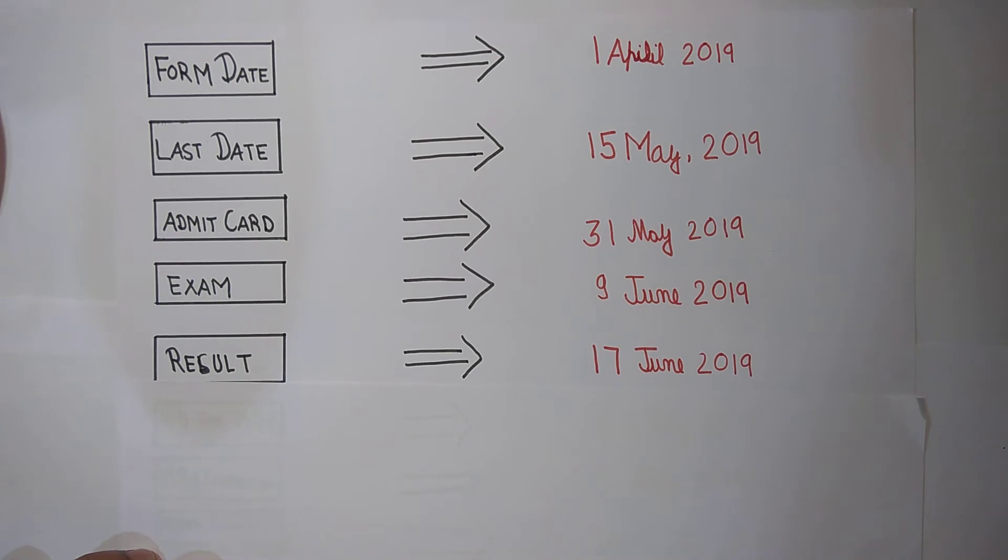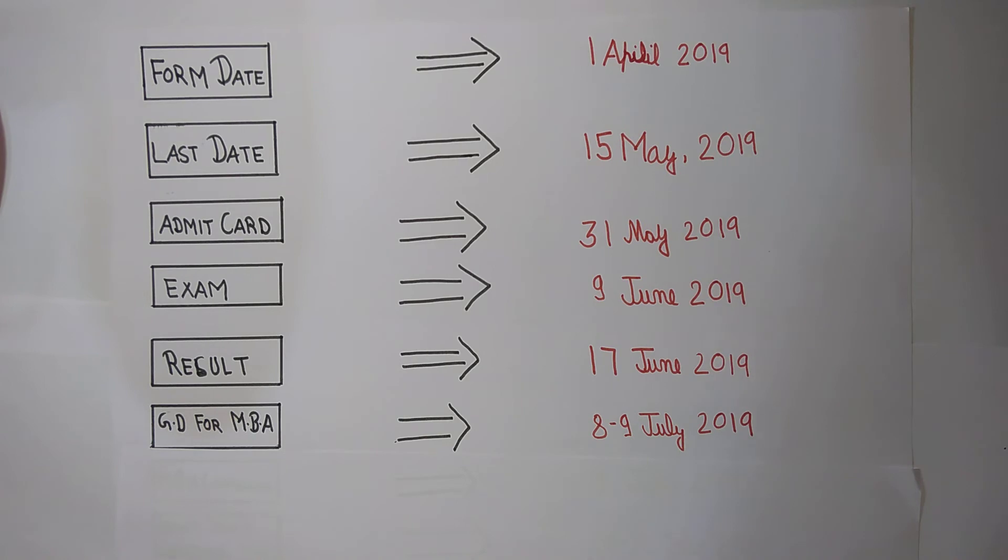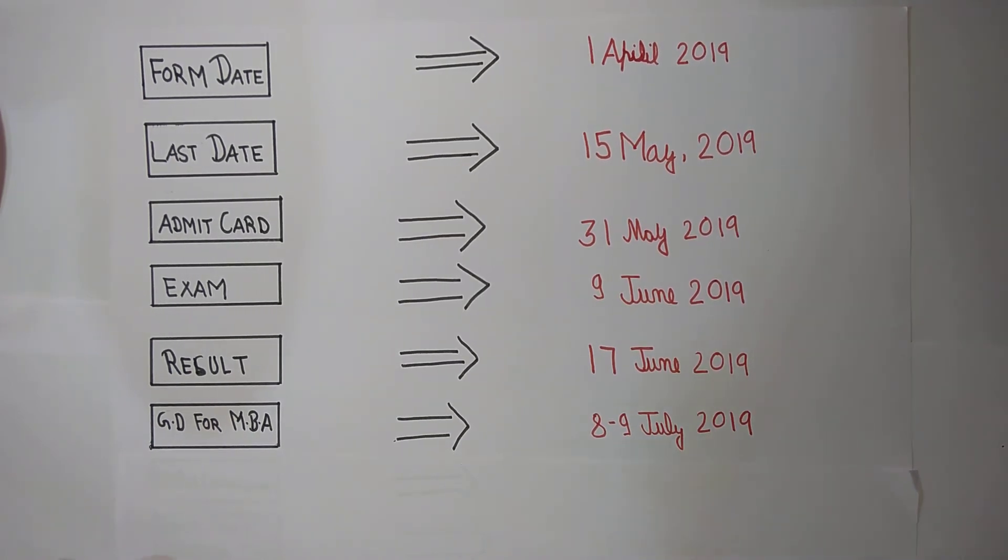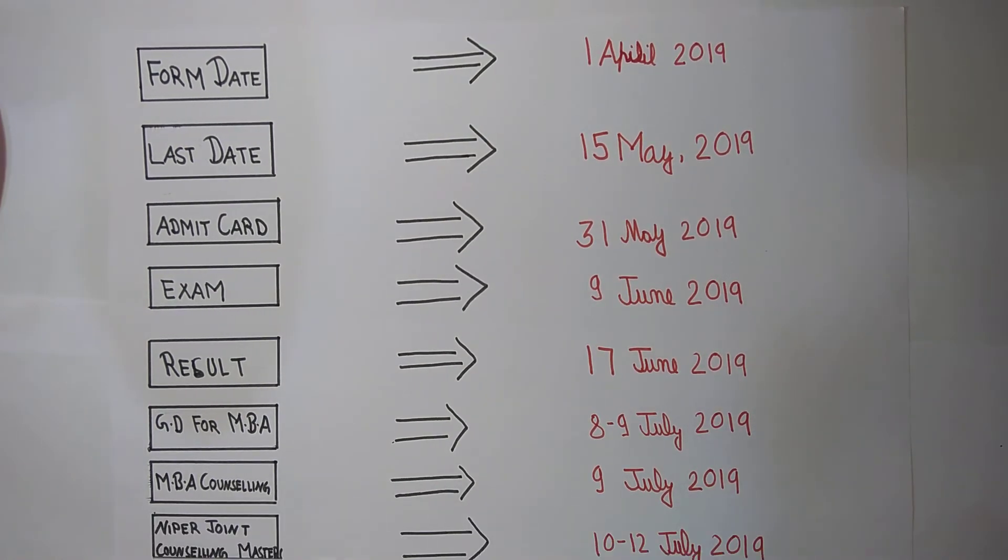The GD for MBA is on 8-9th July. Next is MBA counseling, which will be on 9th July, and the NIPER joining for masters will be held on 10th to 12th July.